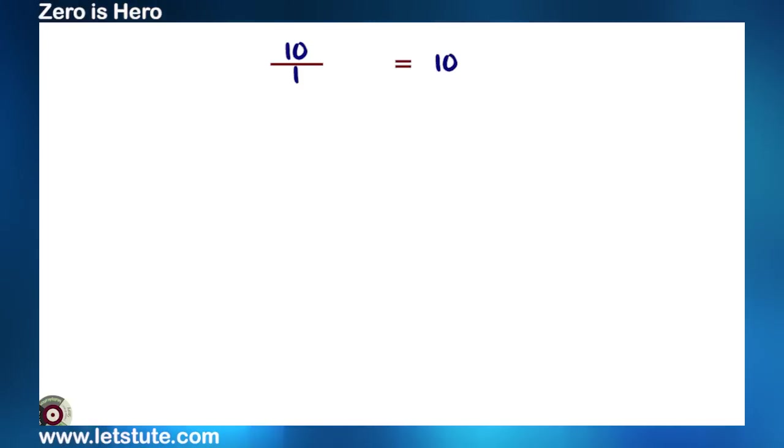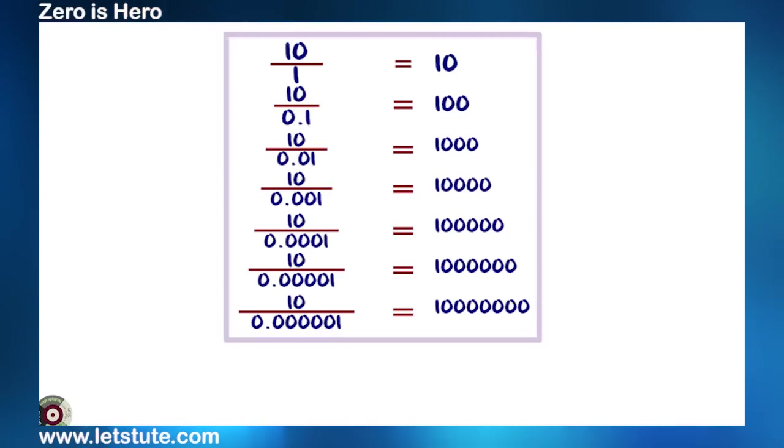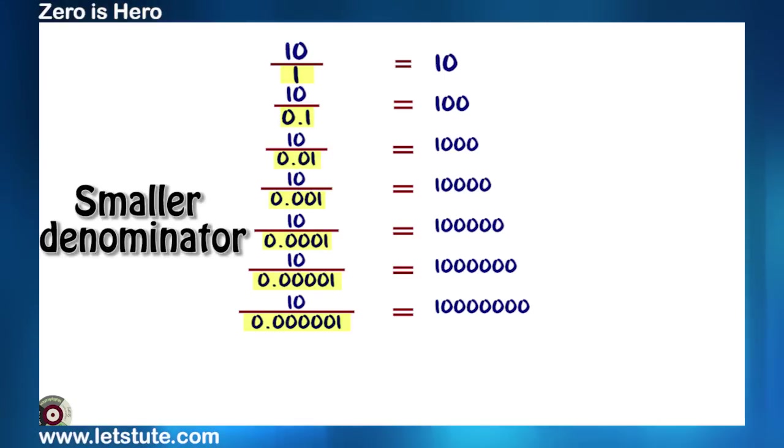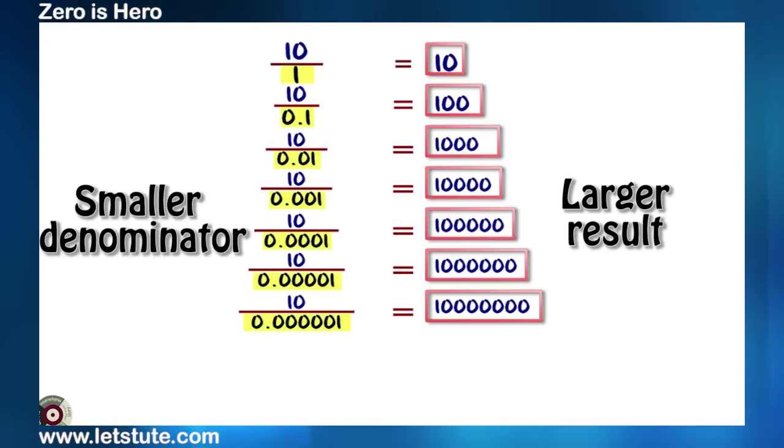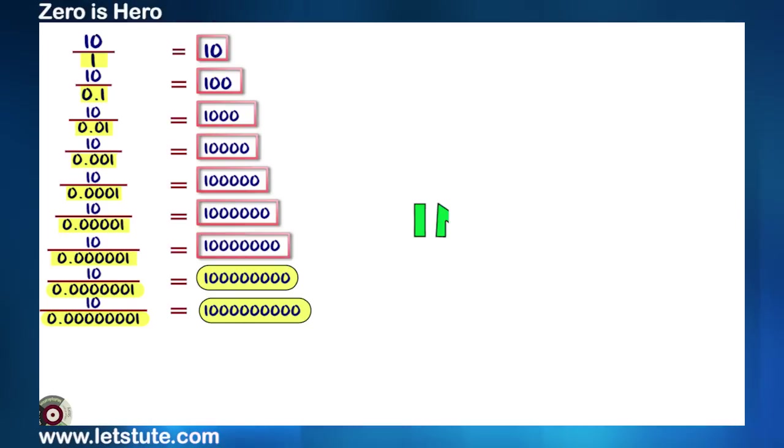So, 10 upon one is simply 10. And 10 upon 0.1 is 100. I think you are understanding where we are going with this. Smaller the denominator, larger will be the result. Now, when the denominator is so small that it is going more towards zero, the result we get is such a big number that we call it as infinity.